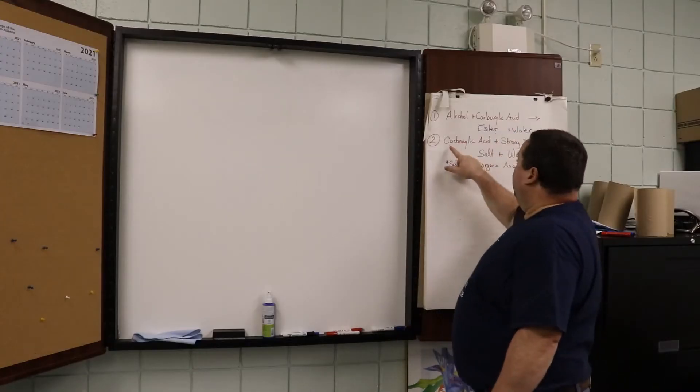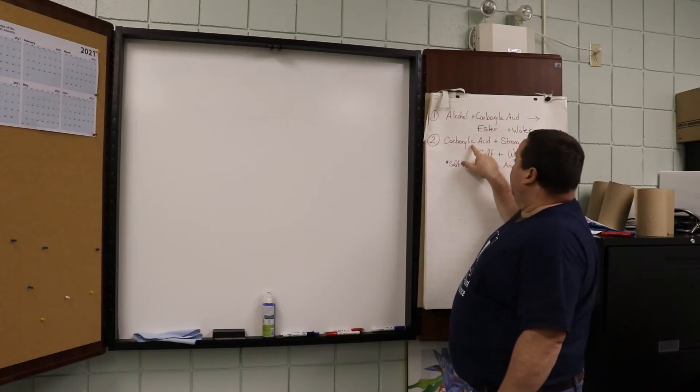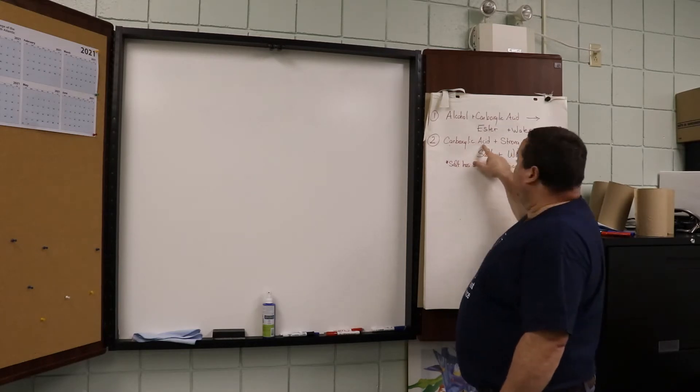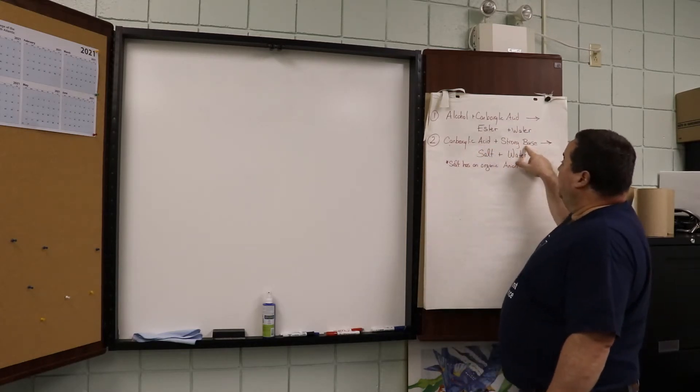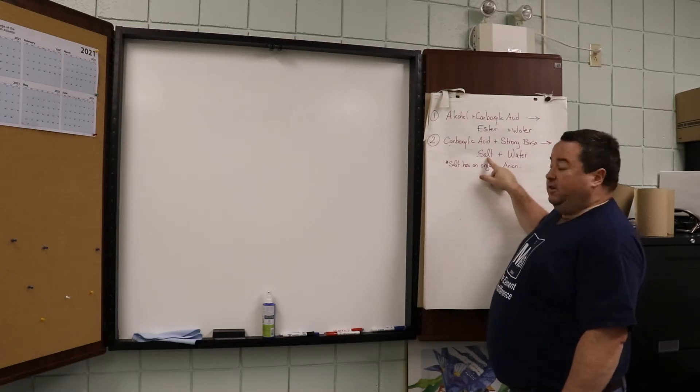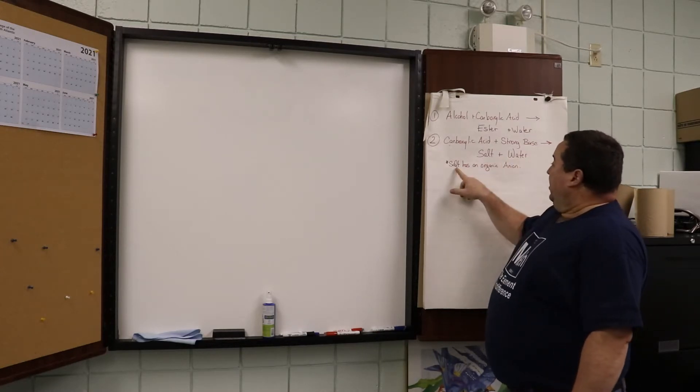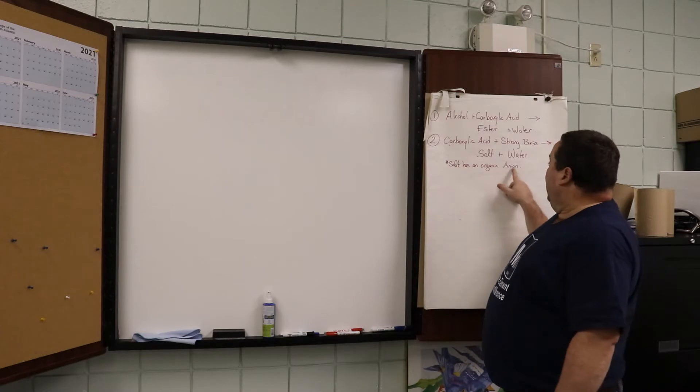In our second reaction, we're going to look at the reaction of a carboxylic acid with a strong base. The products will be a salt and water, and this salt will have an organic anion.